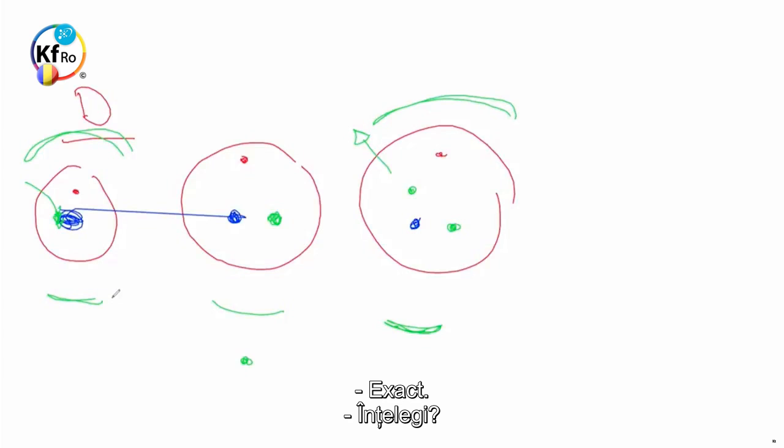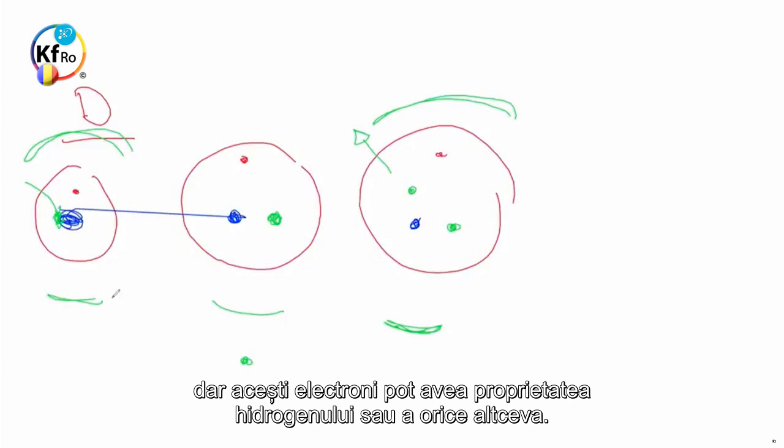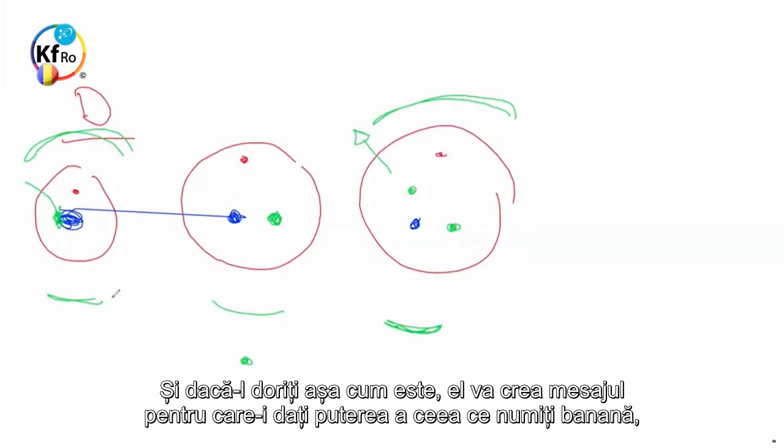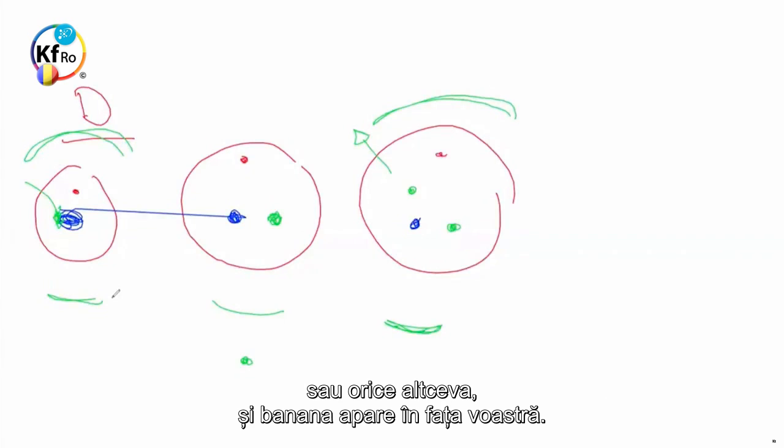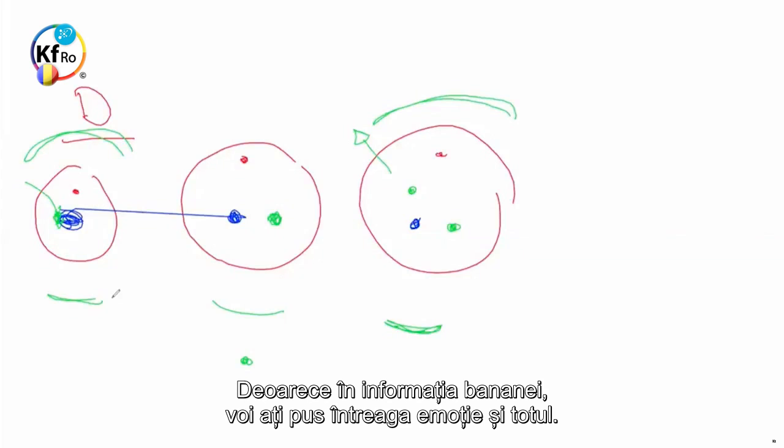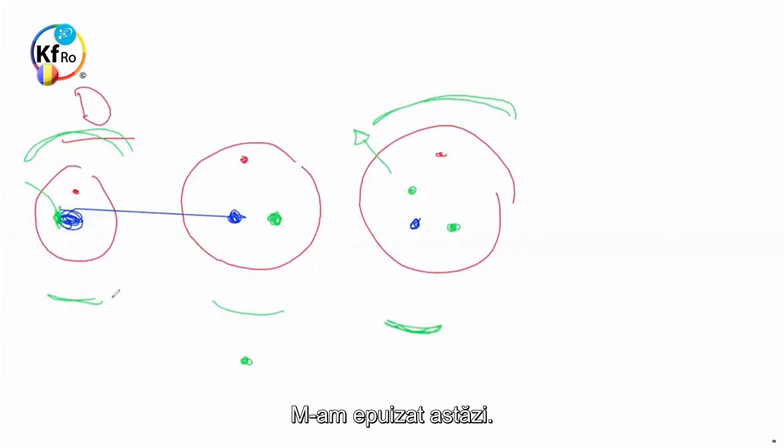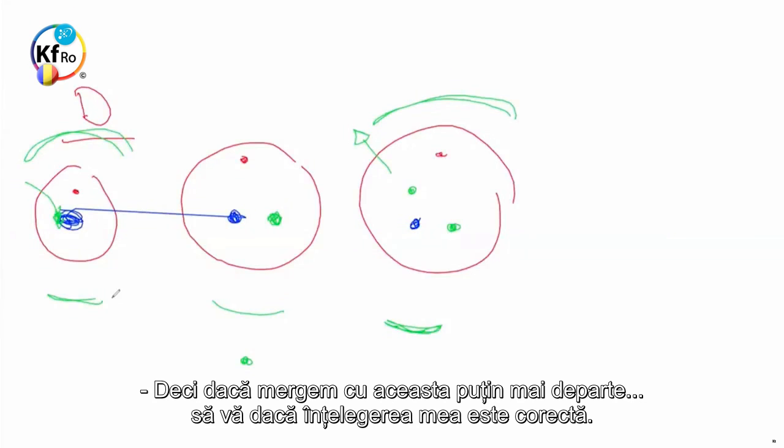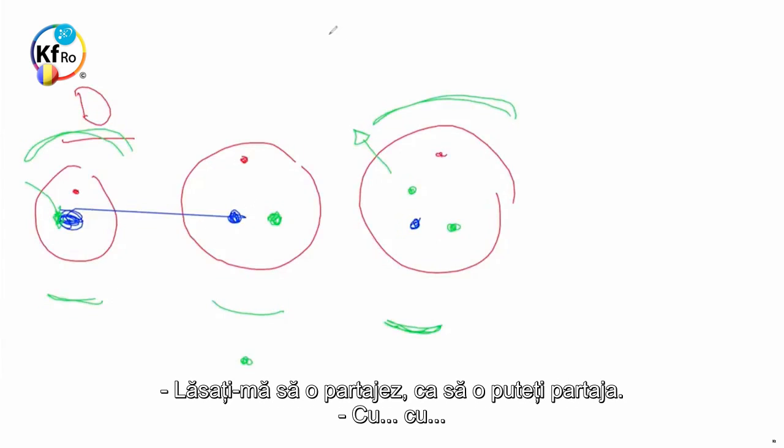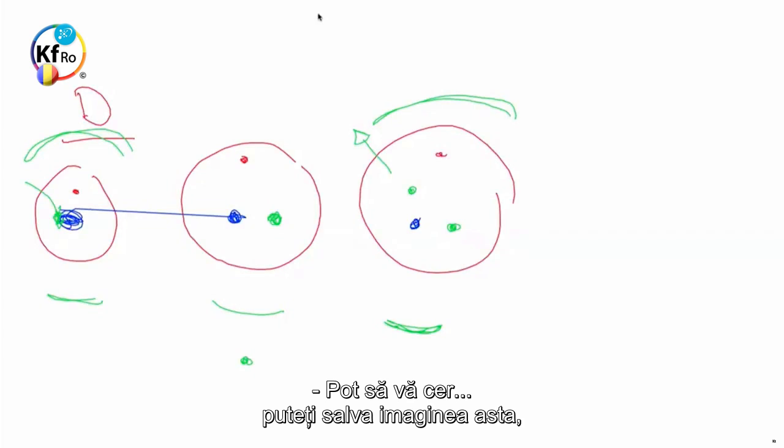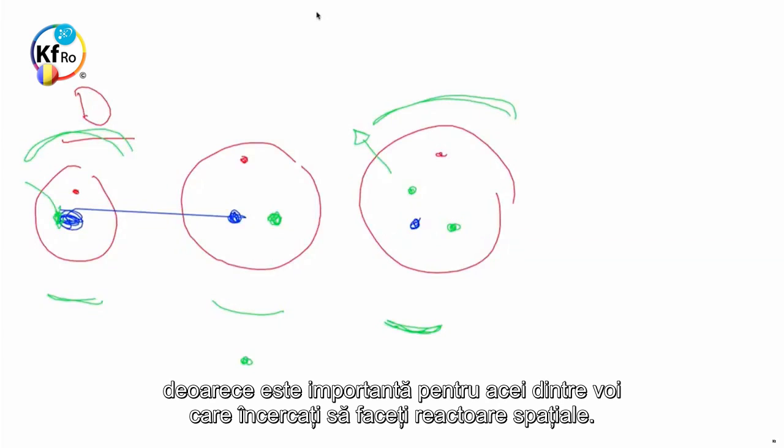Exactly. You understand? So it's not that just you create Electron, but that Electron can be of the property of the Hydrogen or whatever. And if you wish it, as it is, it'll create the message, what you give the strength of you, call it banana or whatever. And the banana appears in front of you. Because in the information of banana, you put the whole Emotion and everything in it. I'm exhausted today. So let me take this a little bit farther, or see if my understanding is correct. Let me share that, you can share. Can I ask, can you take a picture of this? Because this is important for those of you trying to make a Space reactors. Carry on.